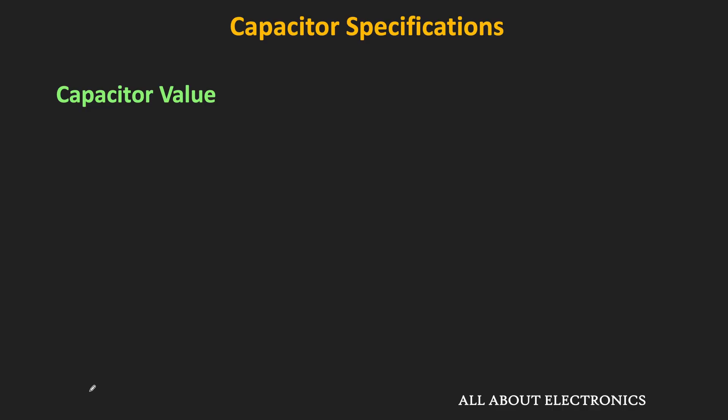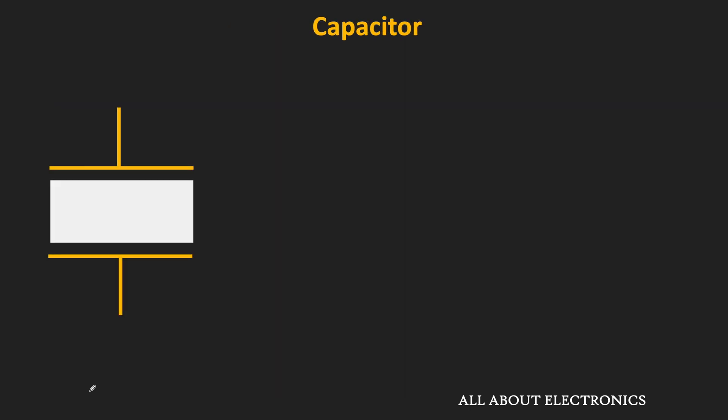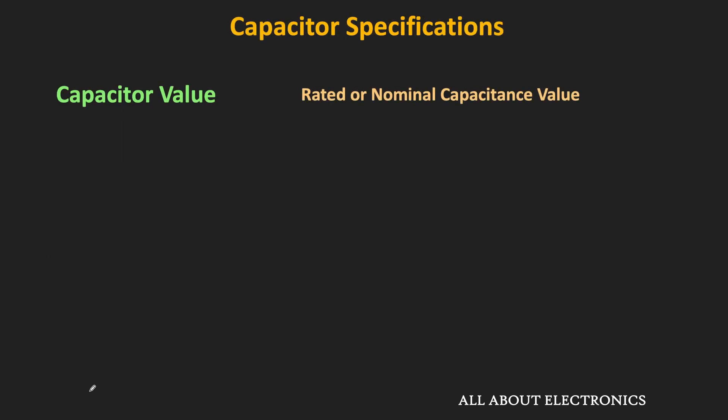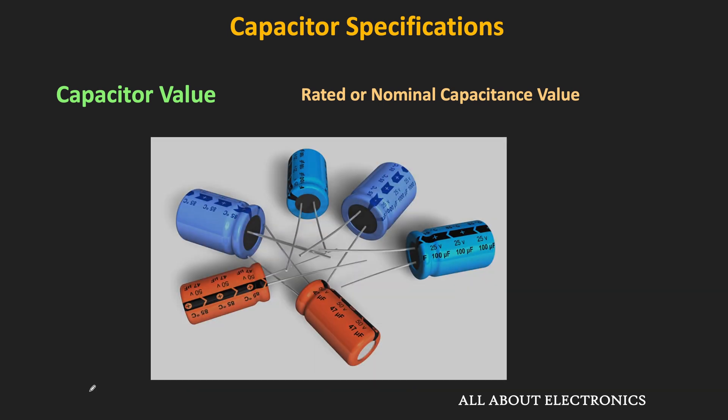The first specification is the rated capacitance or the nominal capacitance value of the capacitor. This capacitance is measured in Farads, and the capacitance of commercially available capacitors ranges from a few pF to hundreds of Farads. This rated capacitance is the value for which the capacitor has been designed, and this value is typically indicated on the capacitor itself.